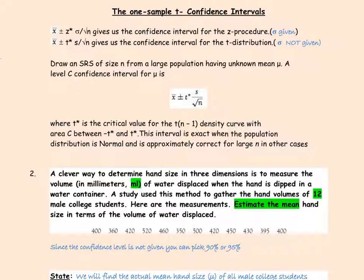In this video, we'll construct a confidence interval using a t-procedure. In the previous chapter, chapter 14, when sigma was given, we used the formula x̄ ± z* σ/√n to find the confidence interval. We used the z-procedure to find the confidence interval.